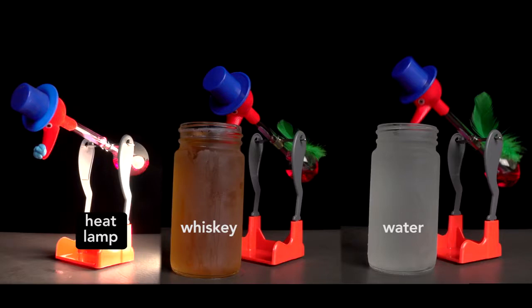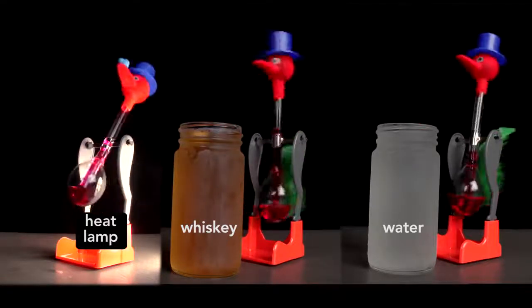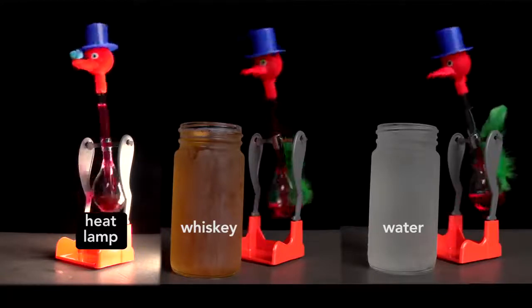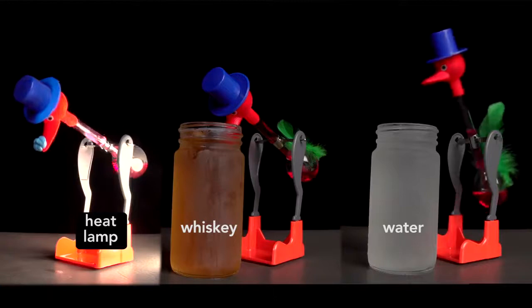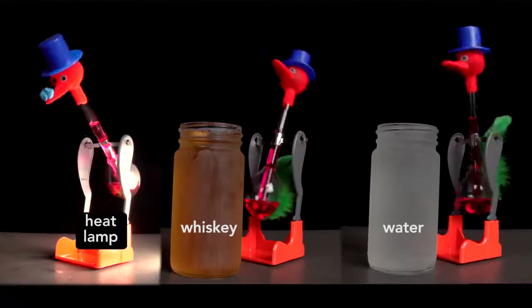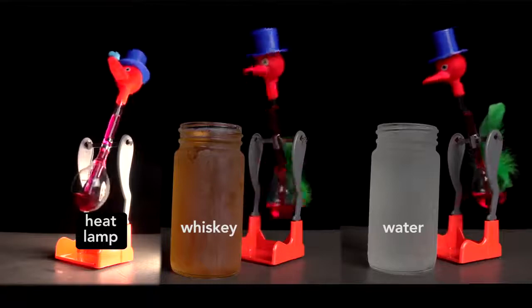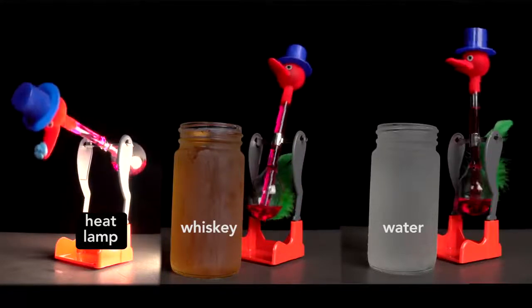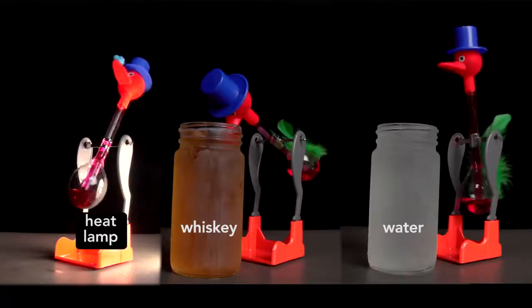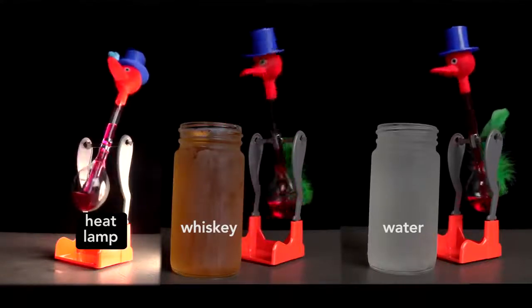Roughly, the heat bird takes three drinks for every one of the water bird. The whiskey bird takes two for every drink of the water bird. The reason the bird drinks whiskey faster than water is because the rate of evaporation of the alcohol is greater than that of water. This means that heat is withdrawn faster from the head, and so more vapor condenses in a shorter amount of time, which accelerates the pressure difference. The heat lamp causes the greatest difference of all, which highlights how an engineer thinks about this bird.